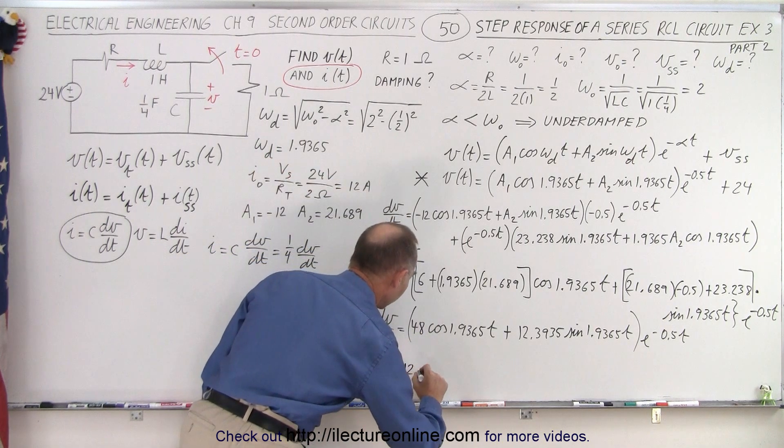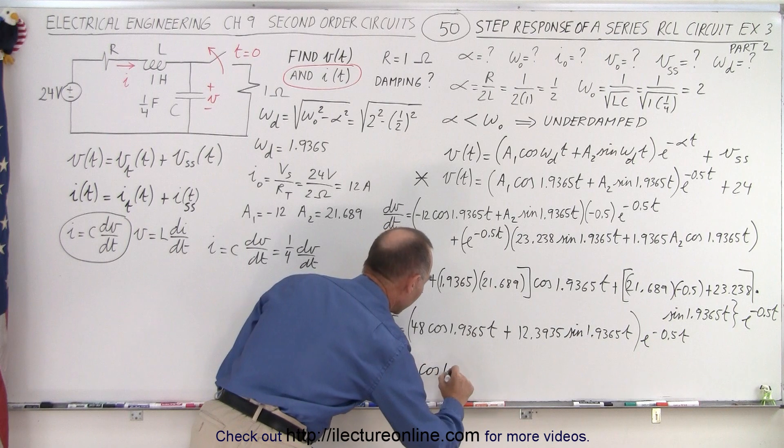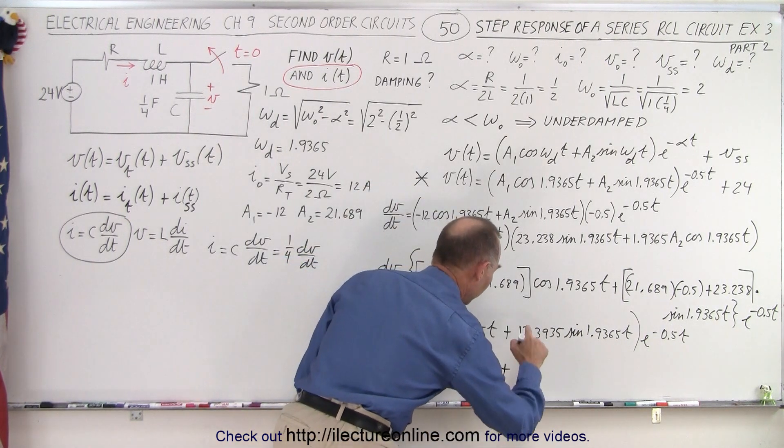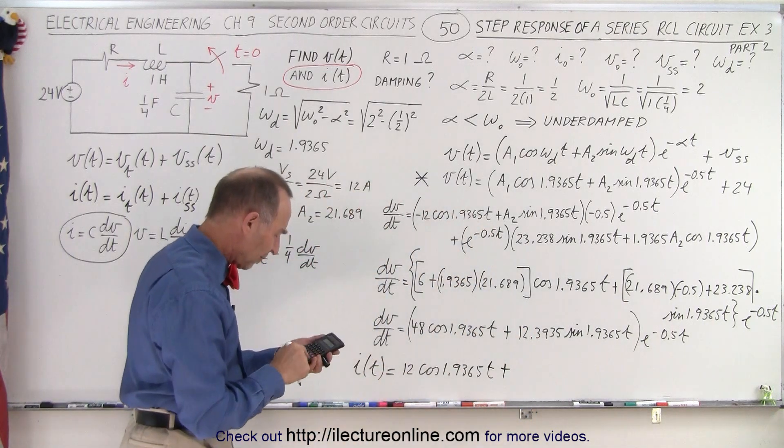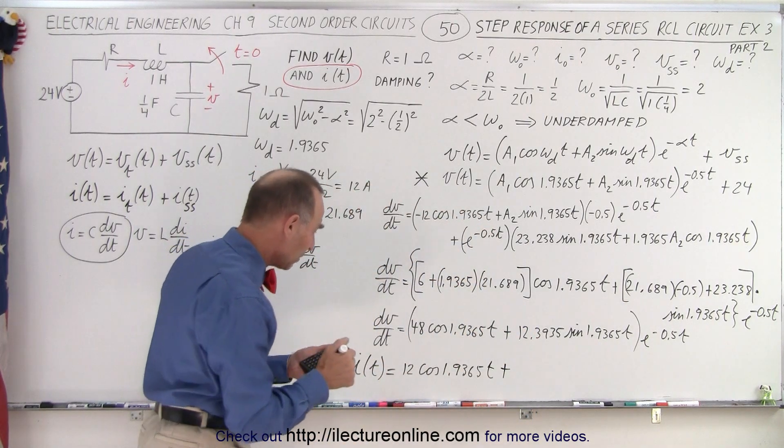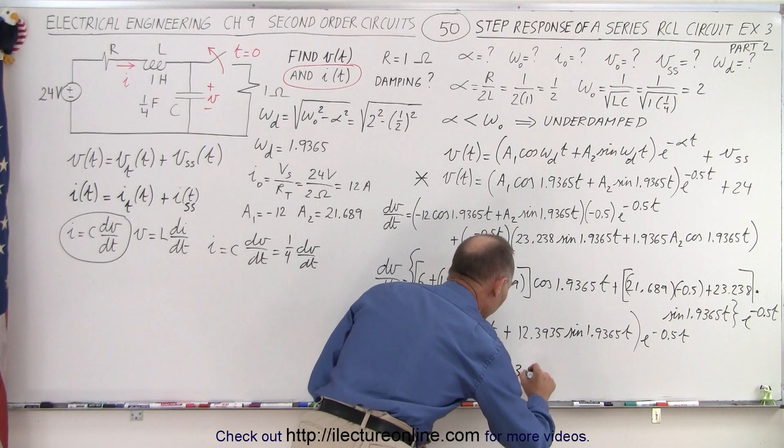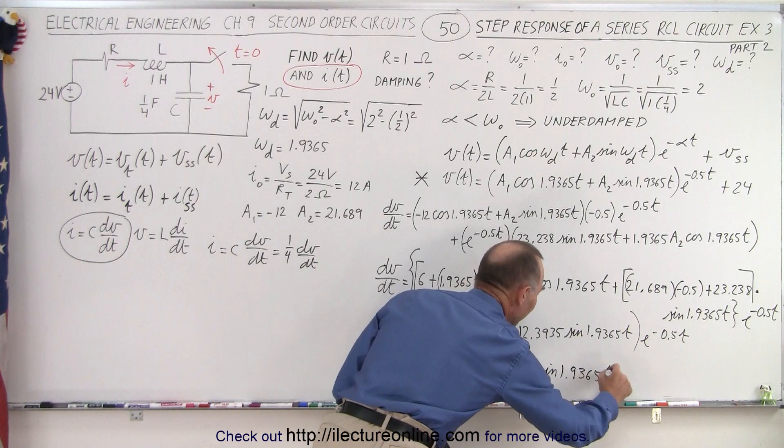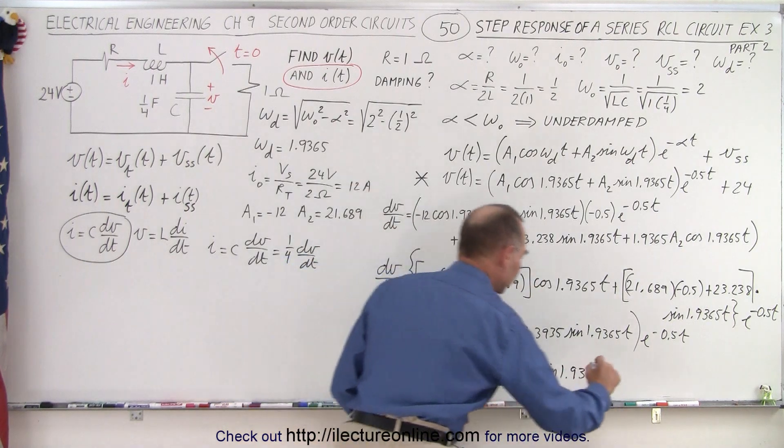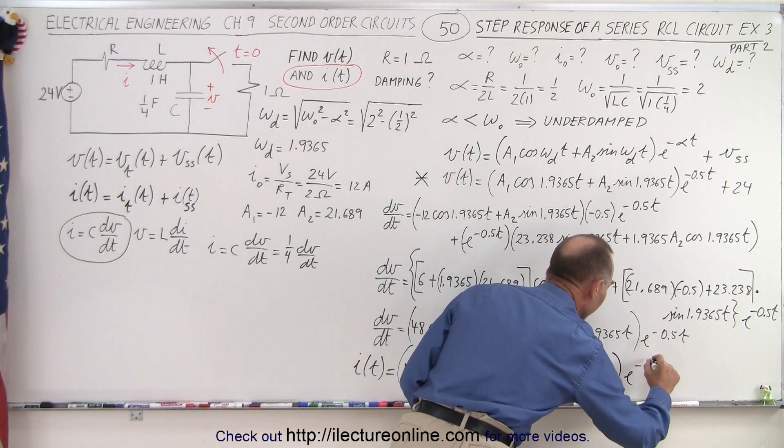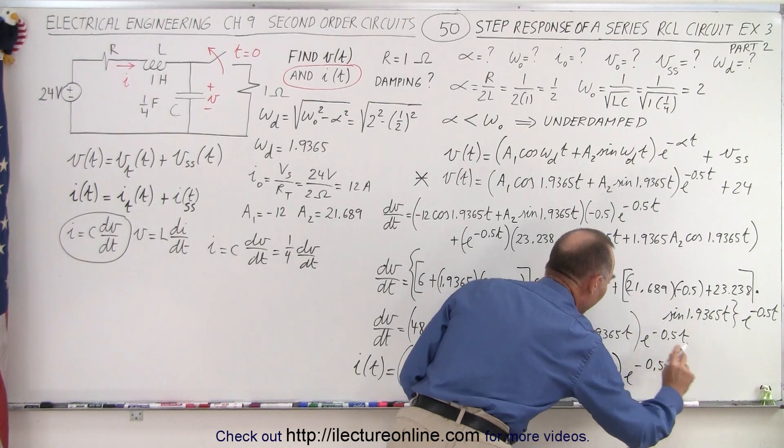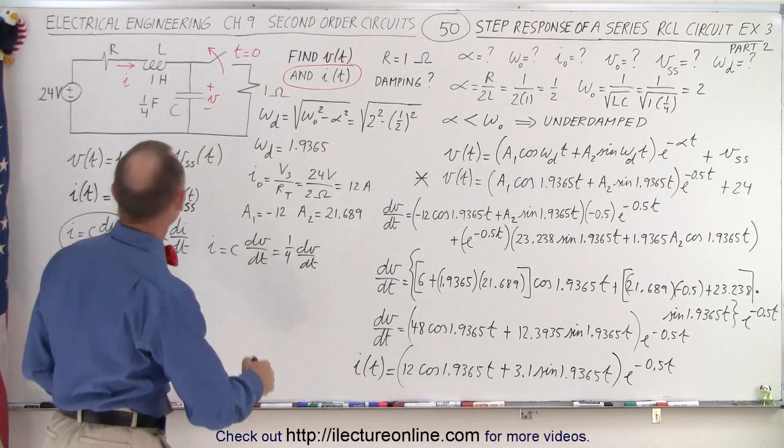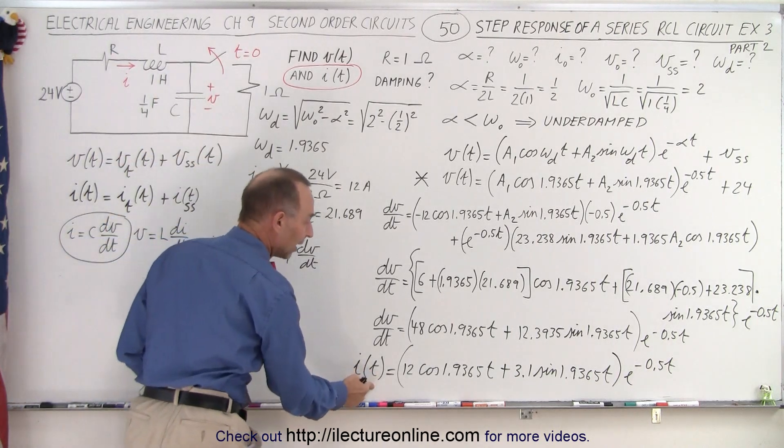That would be 24 divided by 2, that would be 12. So 12 times the cosine of 1.9365t, plus a quarter of that, so divide by 4, that gives me 3.1. 3.1 times the sine of 1.9365t, all times e to the minus 0.5t. And now we have also found the equation for the current, and of course that would be the current through the inductor as a function of time.